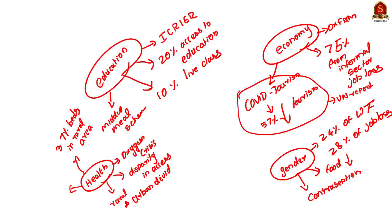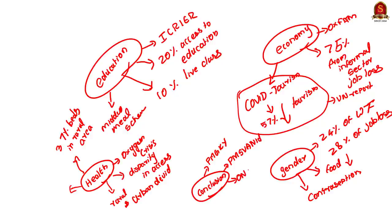Now that we have addressed the body of the answer, we shall move to the conclusion. In the conclusion, you can provide some counter-arguments to balance the answer so that it stays in the middle path. You can talk about various government schemes and say that the government took measures to stop accelerating poverty, ending the answer on a positive note. This is a comprehensive answer for this question. You can also write your version in the comment section, and then we can have a discussion.